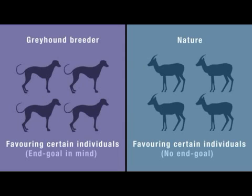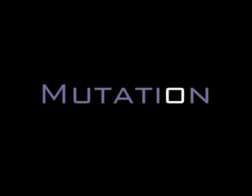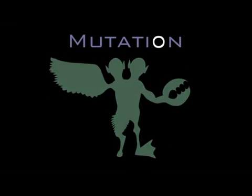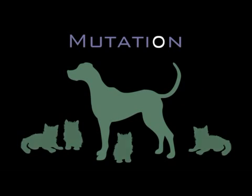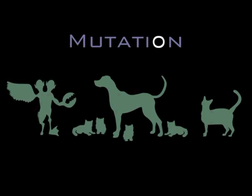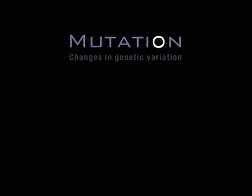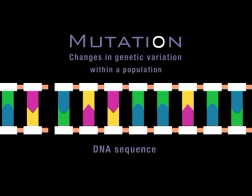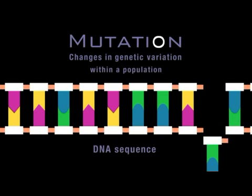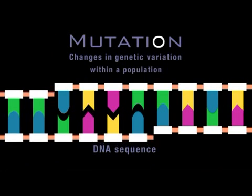Before I say more about natural selection, I want to mention another commonly misunderstood term: mutation. Many think that when biologists talk about mutation, they're referring only to dramatic malformations like animals with extra limbs or heads, or far-fetched scenarios like dogs producing cats, or even morphing into cats. These are misconceptions. Mutations are simply changes in genetic variation within a population, brought about by insertions, deletions and recombinations of the DNA sequence.